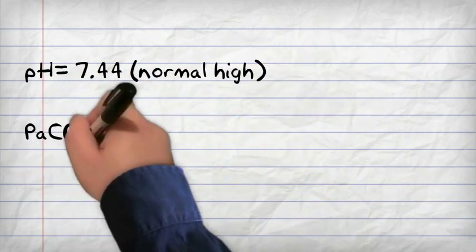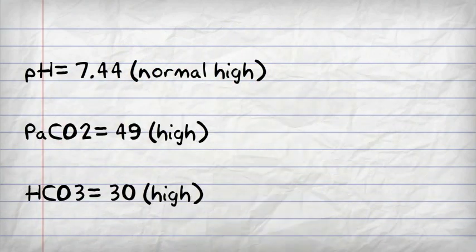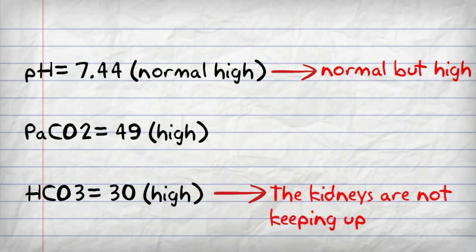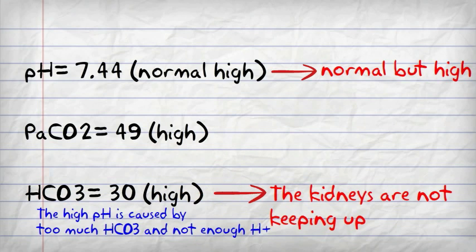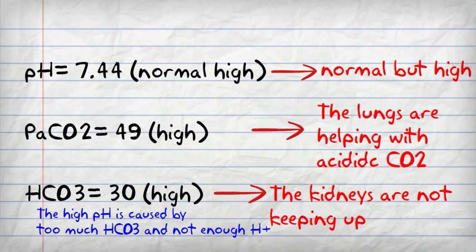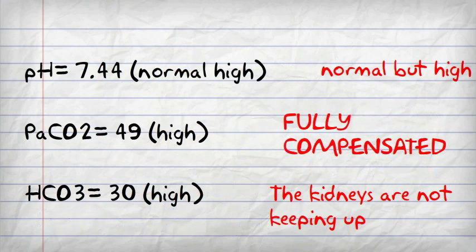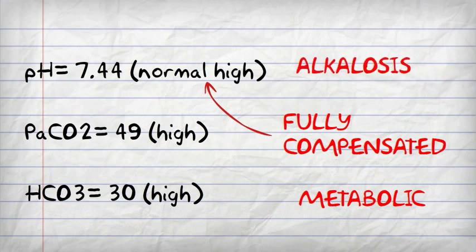And here in our last example, we have a normal high pH, we have a high CO2 and a high bicarbonate. So the kidneys are still not keeping up. The pH is normal but high. But the lungs are helping, so it's fully compensated metabolic alkalosis because the pH is actually normal.